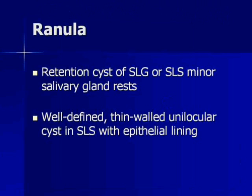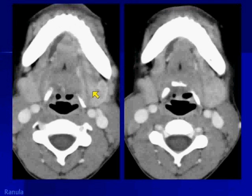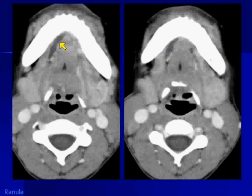One item on the differential was ranula — a retention cyst of the sublingual gland or the minor salivary gland rests in the sublingual space. It's well defined, doesn't enhance, and is lined by epithelium. Here is a nice example: you can see the cystic structure in the right sublingual space, and it doesn't have that taut tubular appearance a duct would have. It's also too anterior — the orifice of the submandibular gland duct empties into the oral cavity more posteriorly.